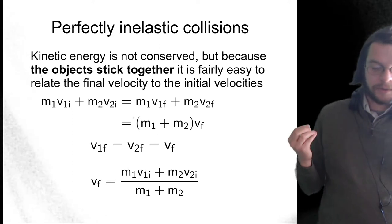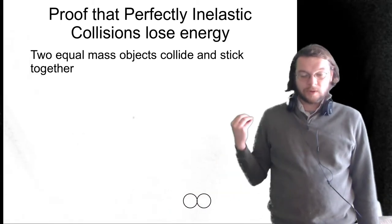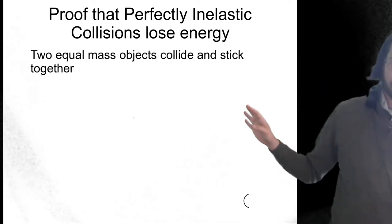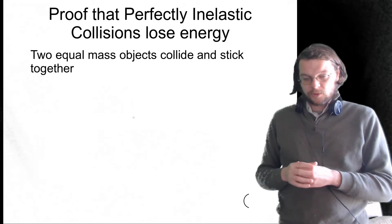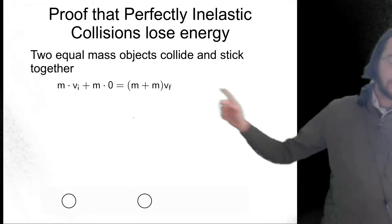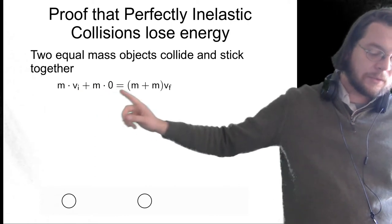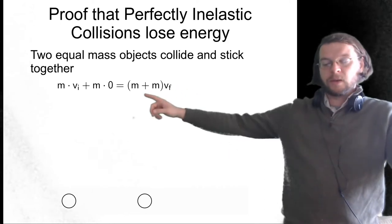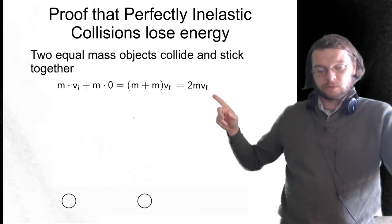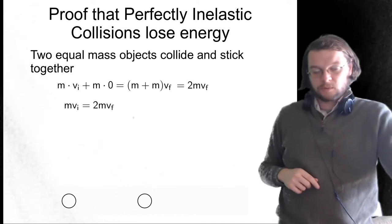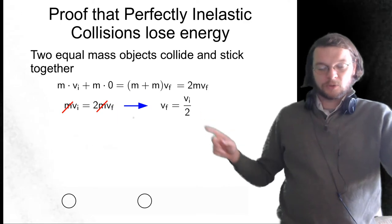Consider a simple situation where one object is at rest, another object is coming in, they both have the same mass, and they stick together. There's a question on the midterm and final asking whether perfectly inelastic collisions conserve energy — the answer is no. The initial momentum of object one is V sub I; the other object is at rest with velocity zero. They stick together, and because the masses are the same it's M plus M, giving 2M times VF. Solving for VF, we find that the final speed is the initial speed divided by 2.